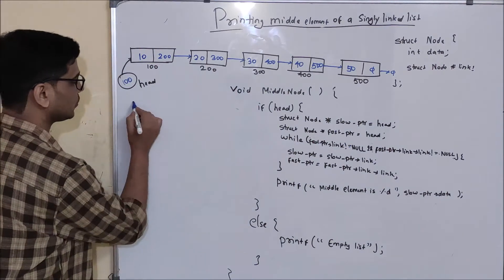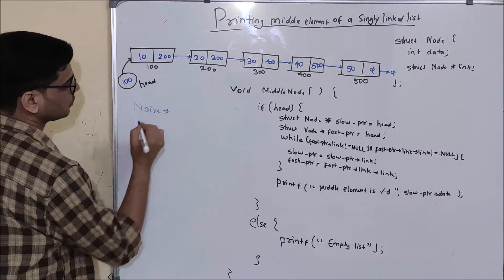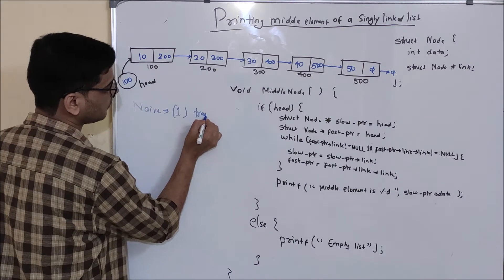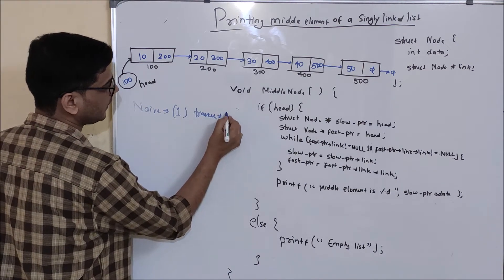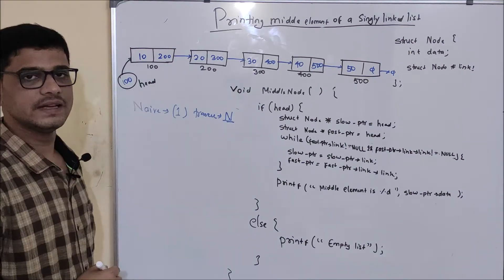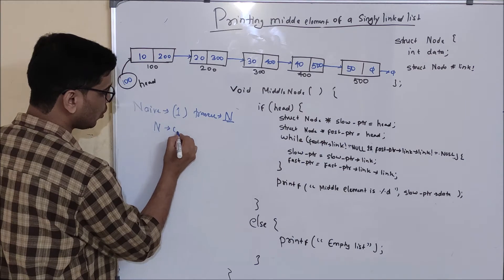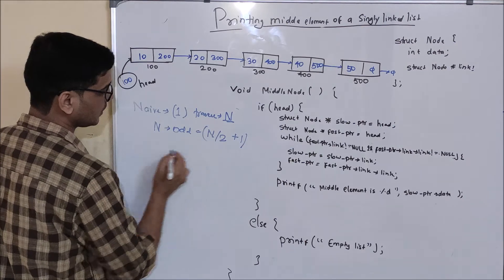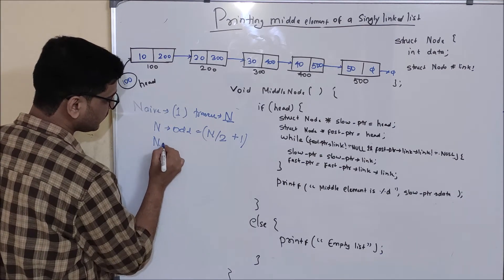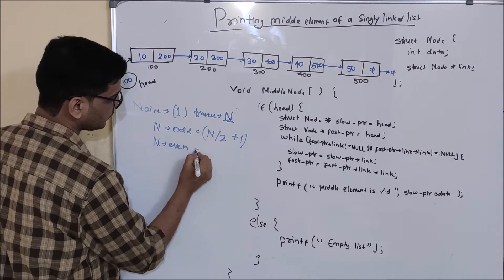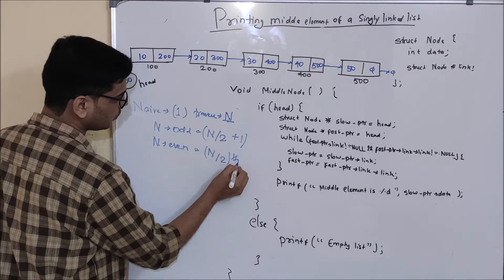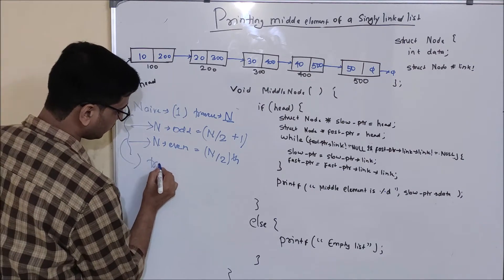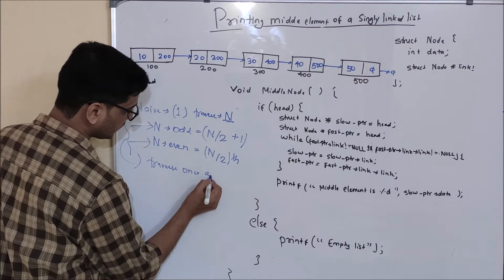So first of all, what will be the naive solution for it? What we are going to do is: in the first step we will traverse to find the length — let n be the length. And then, if n is odd, we will print the n/2 + 1th node. And if n is even, we will print the n/2th node. And to do this, we need to traverse once again.